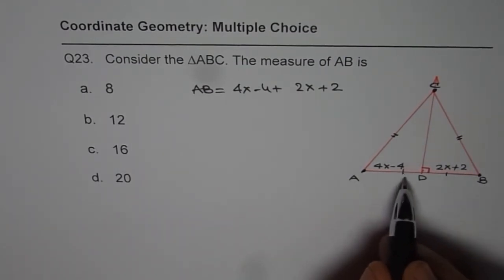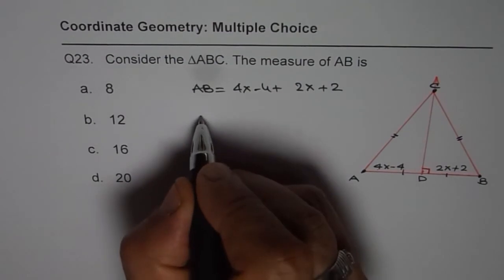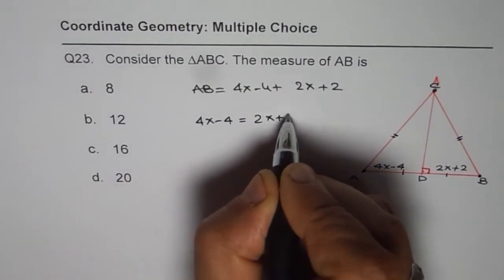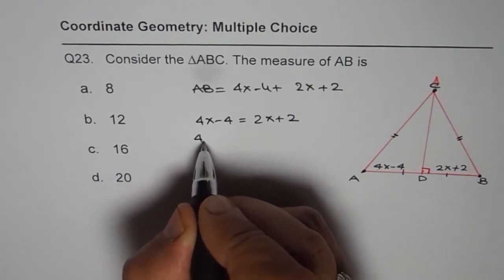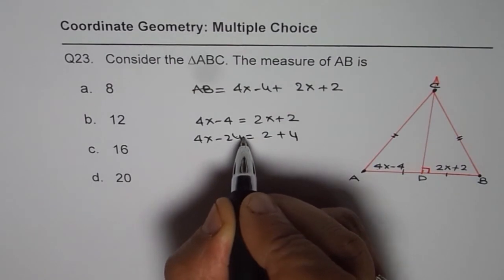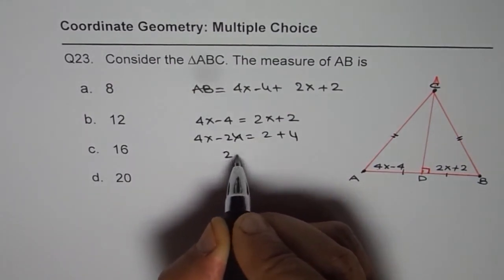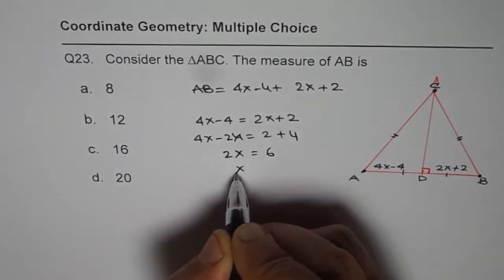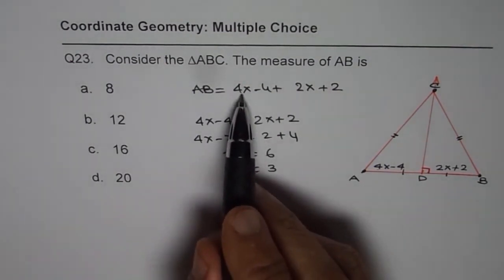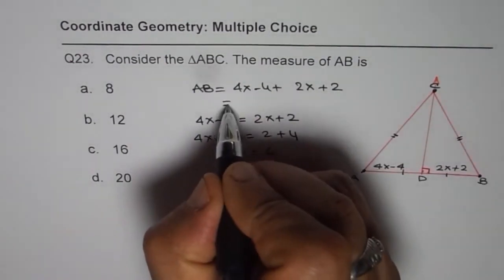Now that should help us find the value of x. So we have 4x minus 4 equals 2x plus 2. Bringing x's together, we get 4x minus 2x equals 2 plus 4. So 2x equals 6, and x equals 3. Now if x is 3, we can substitute x here.